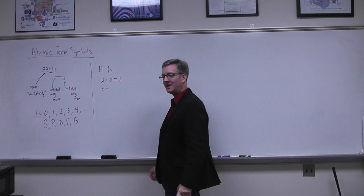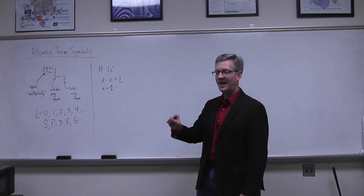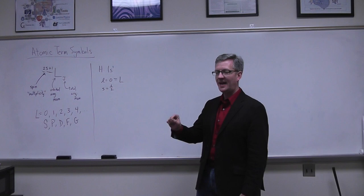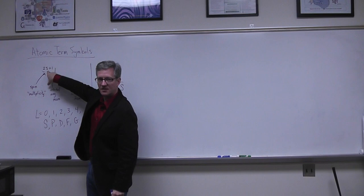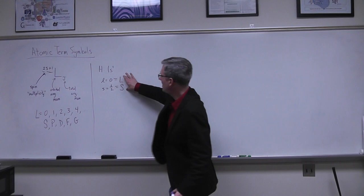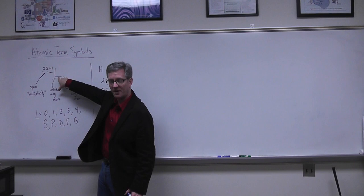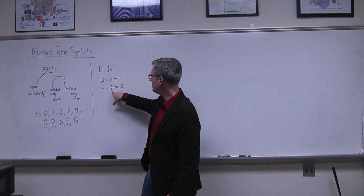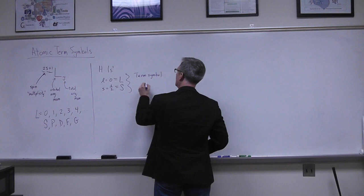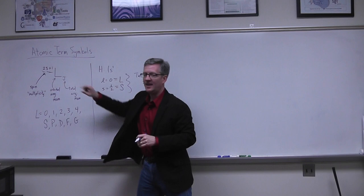That electron also has spin angular momentum quantum number little s of one-half — the only possible value for a single electron. Since I have a single electron, that little s value is also equal to capital S, which goes into the spin multiplicity component. So capital L is zero (symbol S) and 2S+1 equals 2(1/2)+1 = 2, giving a superscript 2 for spin multiplicity and a capital S for orbital angular momentum.